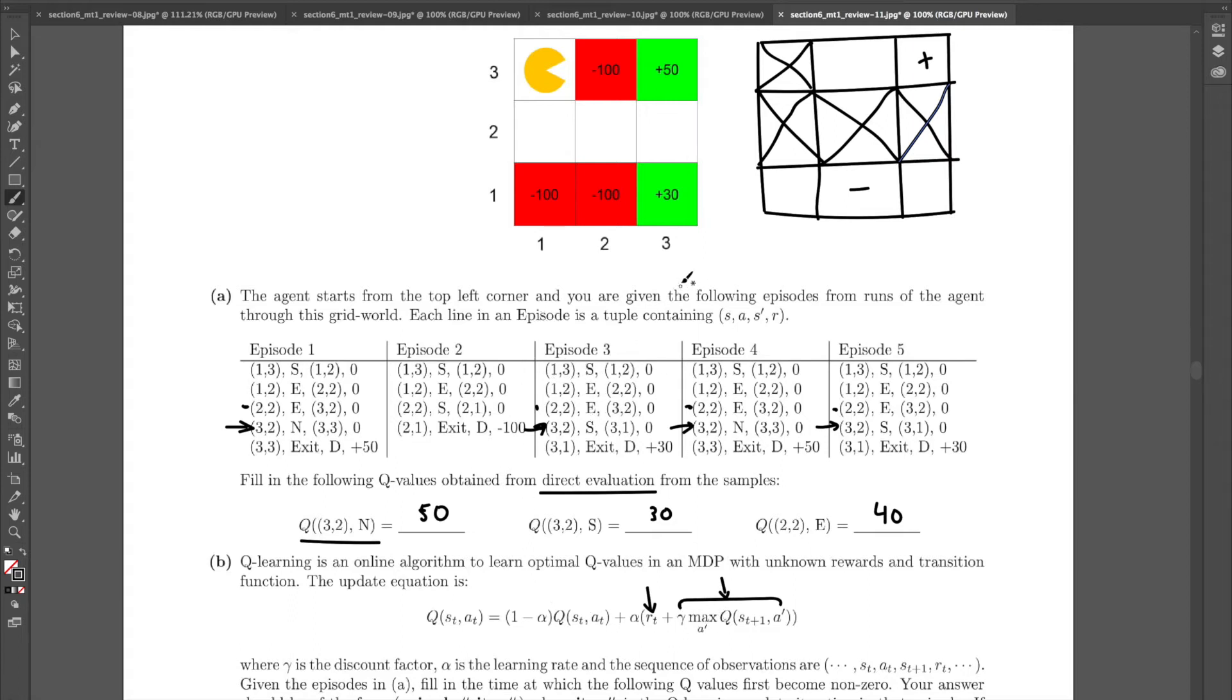Okay, episode three, south, east, east, south. So south, east, east, south. We exit, we get plus 30. So this thing is positive.